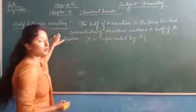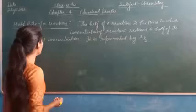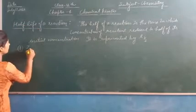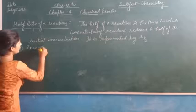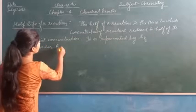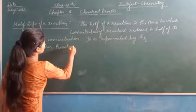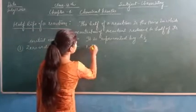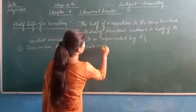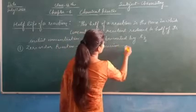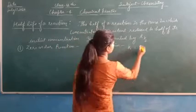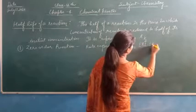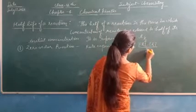We will find out the half life for zero order and first order reactions. The rate expression for a zero order reaction is: k equals initial concentration minus final concentration, divided by t.